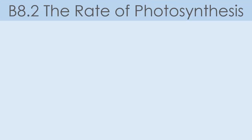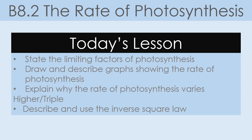Hello and welcome to the third lesson on photosynthesis. This lesson is B8.2, and we're going to be looking at the rate of photosynthesis — how fast it happens. Today we'll look at some of the limiting factors of photosynthesis, draw and describe graphs showing the rate of photosynthesis, and explain why the rate varies depending on the time of day or time of year. If you're doing higher content or triple science, you'll also need to understand the inverse square law for light intensity.